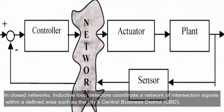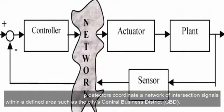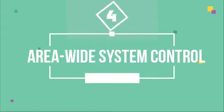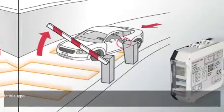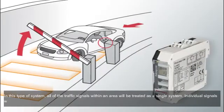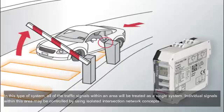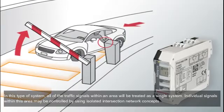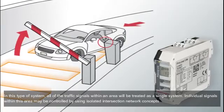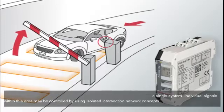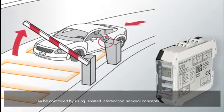The fourth application is area-wide system control. In this type of system, all of the traffic signals within an area are treated as a single system. Individual signals within this area may be controlled by using isolated intersection or network concepts.